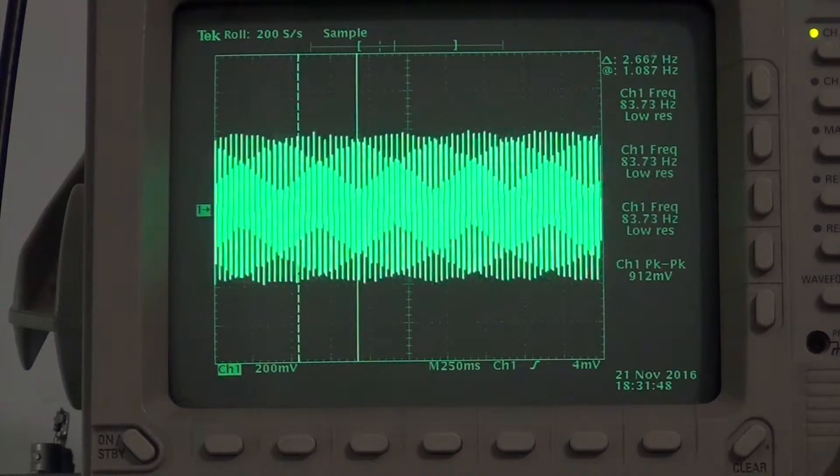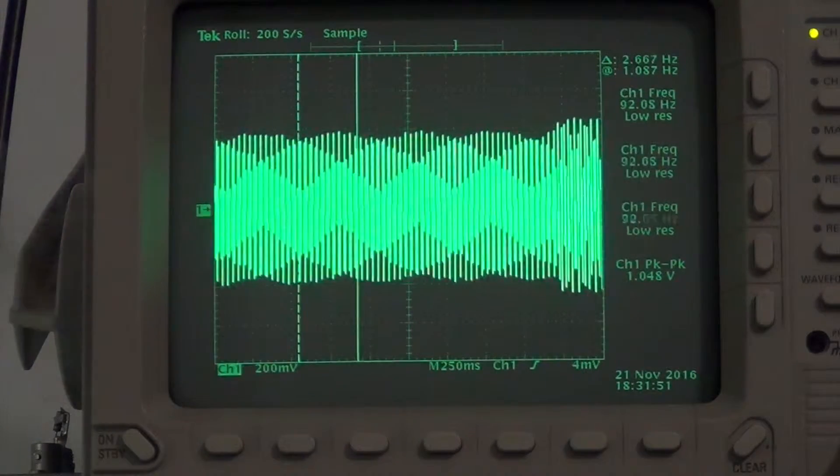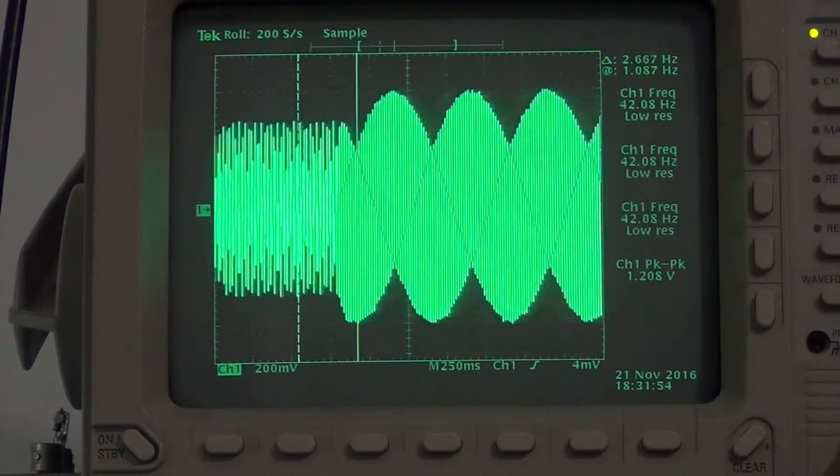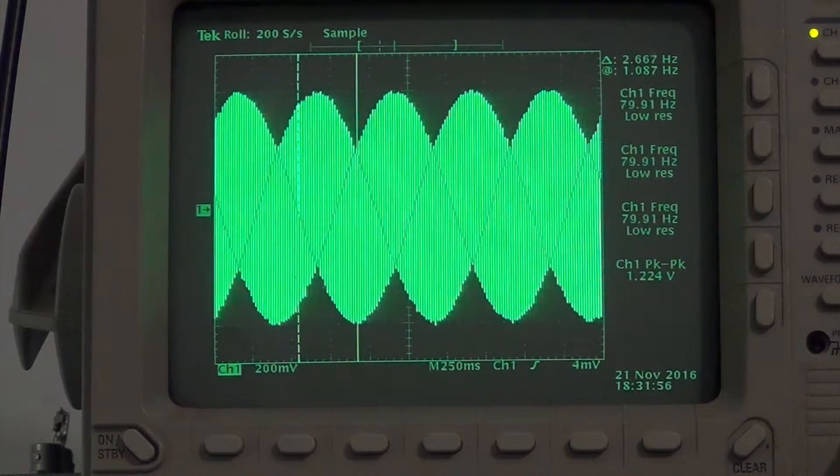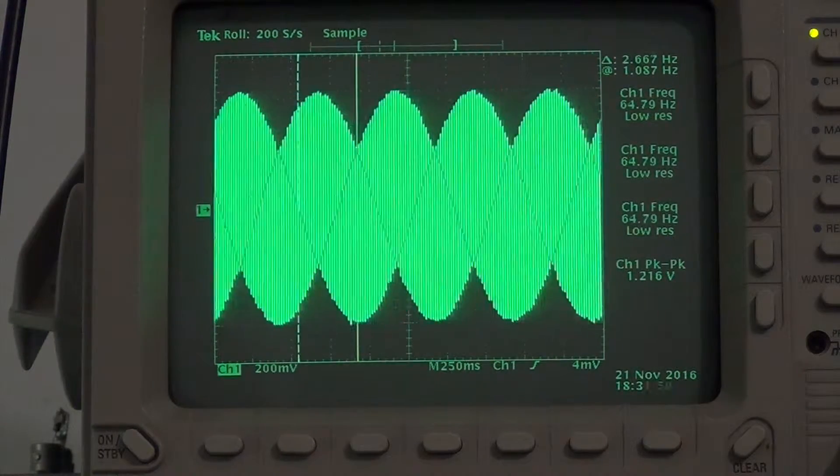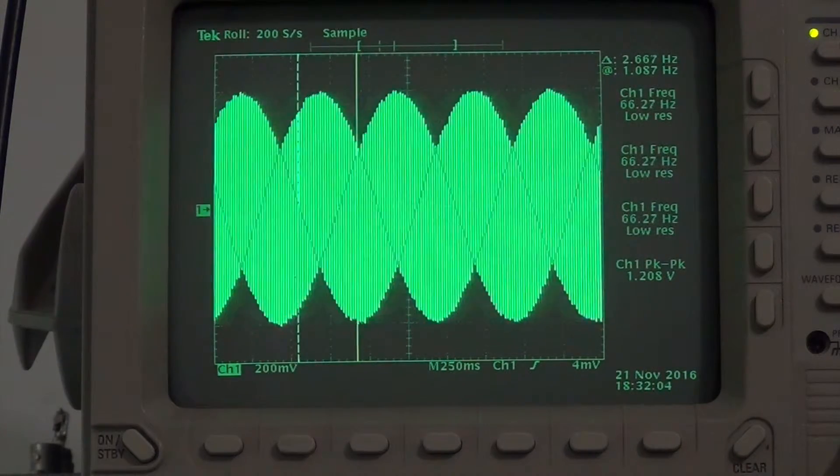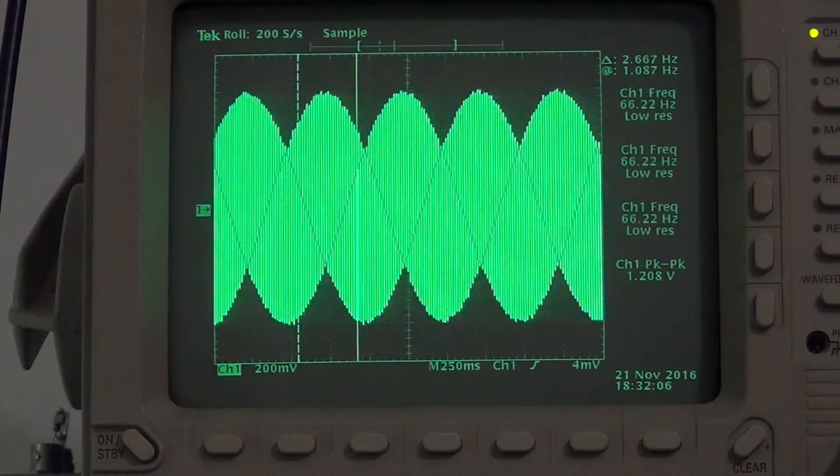I think we already found the resonance frequency, that is around 66 hertz. Okay, good. So we proved our point. It's possible to measure the resonant frequency of a loudspeaker using a pulse generator and an oscilloscope.